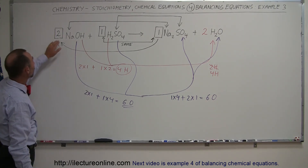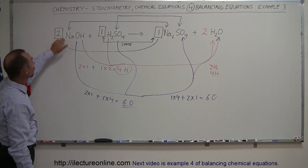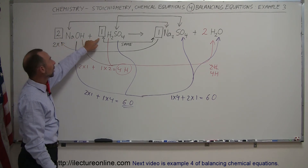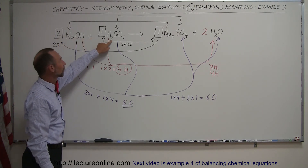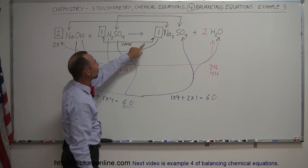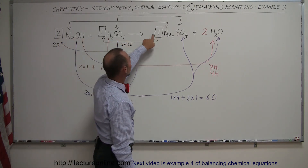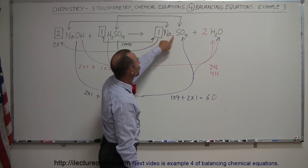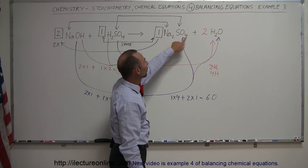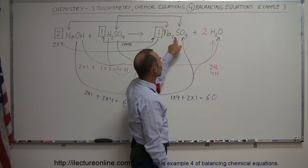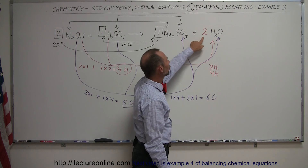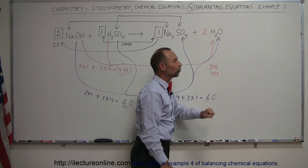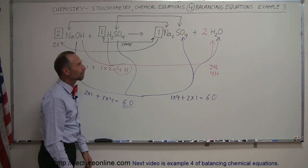The final balanced equation reads: two moles of sodium hydroxide plus one mole of sulfuric acid yields one mole of sodium sulfate plus two moles of water.